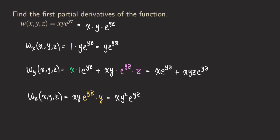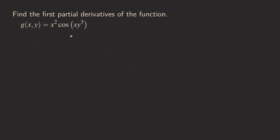We're finished finding the first partials for this three-variable function. Let's look at the last example. I tried to make things look more complicated, but it's actually not too bad. We are going to find the partial derivatives with respect to x and y for this function of two variables. For Gx(x,y): we have a product of two functions since we're differentiating with respect to x — the first is x², and the second is the cosine function which contains x.